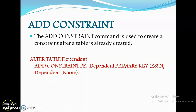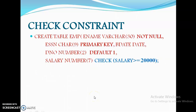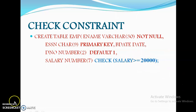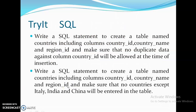The last constraint is the CHECK constraint. For example: salary CHECK (salary >= 20000). When you try to insert values into the salary attribute, you cannot enter a value below 20,000 — the DBMS will always check the value. That is the CHECK constraint. Thank you, hope you all understand; try to do this and if you have any doubts, please contact us.